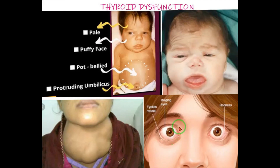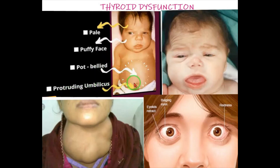Have you all understood? Now see in this picture: cretinism shows pale color, puffy face, protruding belly, stomach, and protruding umbilicus — these are the symptoms of cretinism. This baby is also affected by cretinism. Then this one is goiter, and this is Graves' disease.